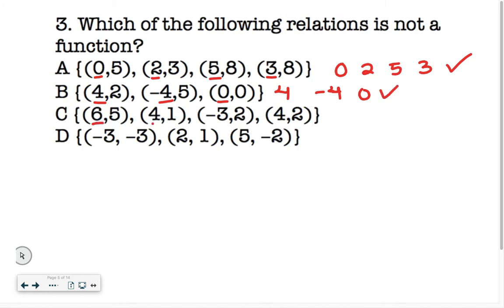It's 6, 4, negative 3, 4. So we have 6, 4, negative 3, 4. Because these two repeat, then it's not a function. So it should be C, but let's just make sure D also works. So negative 3, 2, and 5. Negative 3, 2, and 5 are all different numbers. So the only one that is not a function, because it repeats the number 4, would be the letter C.